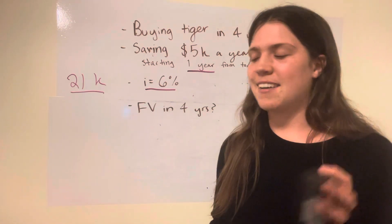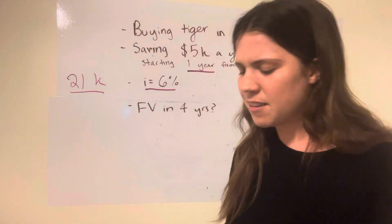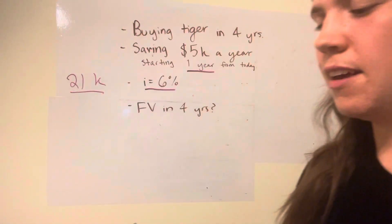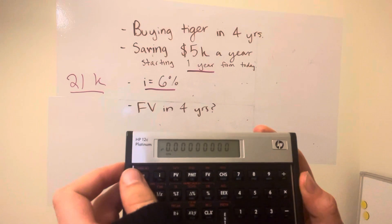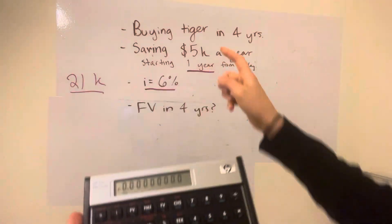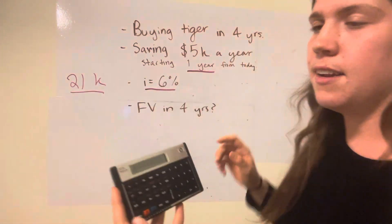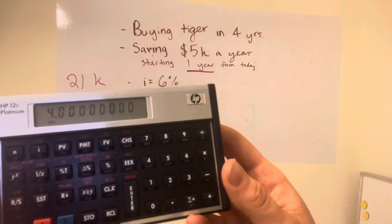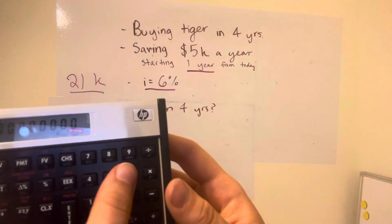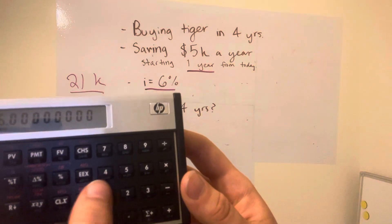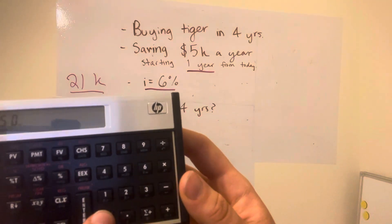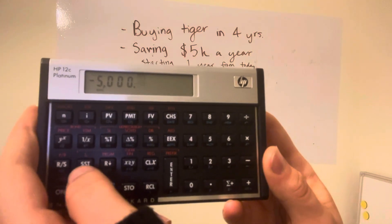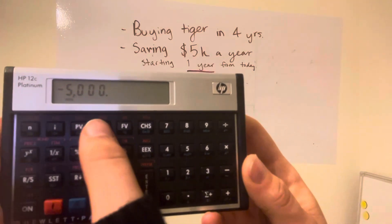We're going to use the formula and the calculator. Let's do the calculator first. We're going to be using the top keys. We're told four — this is going to be our N, so four for N. Then for our I, we're told it's six percent, so six for I. Our payment is $5,000, and we're going to make that negative because it's going out and we want our future value to be positive. So that goes into payments.